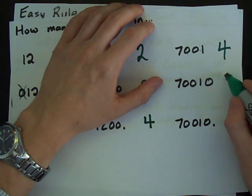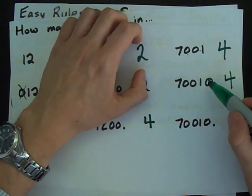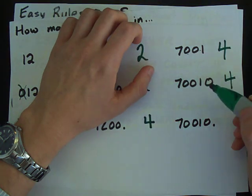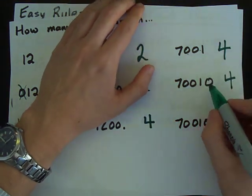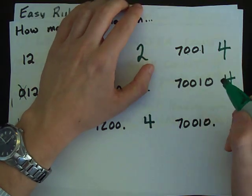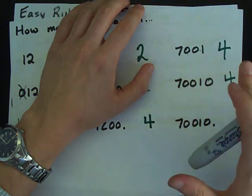This also has four significant figures because this trailing zero does not count. There's no decimal point written. So, we don't care about that zero. Well, I mean, it's the difference between 7,001 and 70,010. But, at the same time, there's only four significant figures according to our rule.